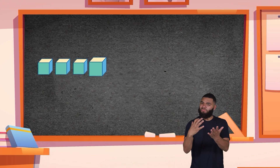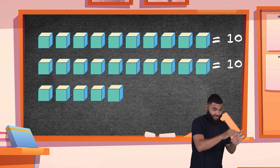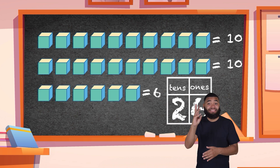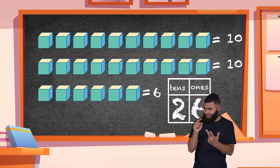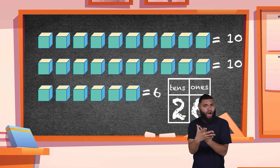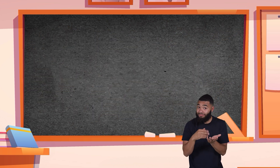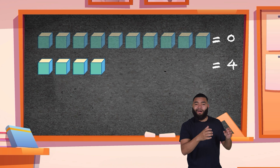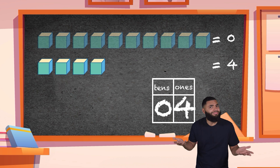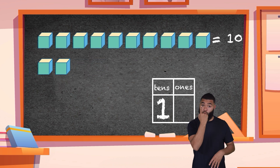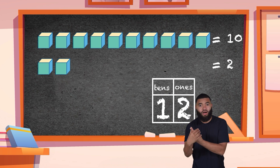Let's practice a few more numbers using our trusty cubes. If there are two tens and six ones, what number do we have? If you said twenty-six, you are right! How about another? What about if we have zero tens and four ones? Four! And how about one ten and two ones? That's right — it is twelve!